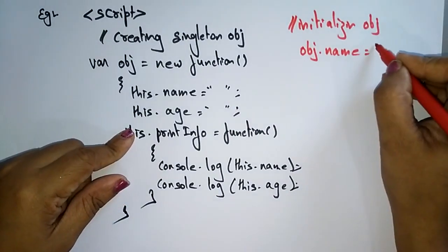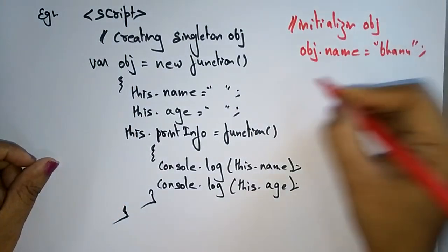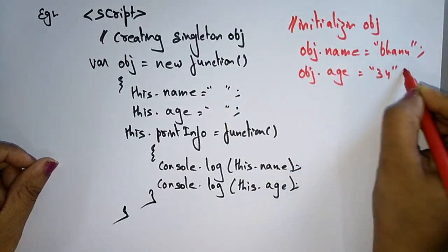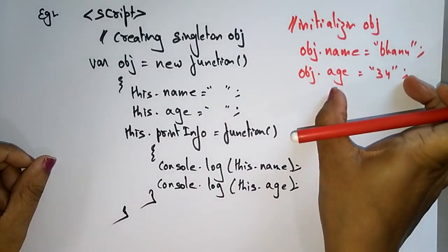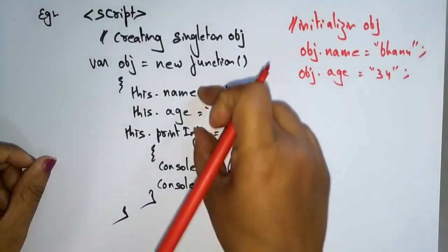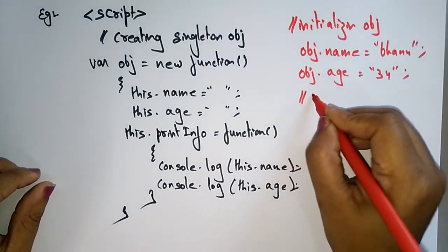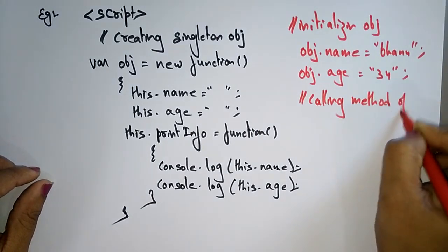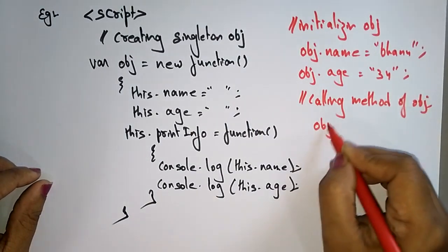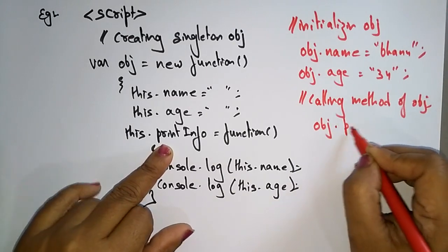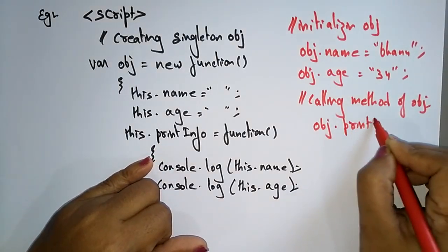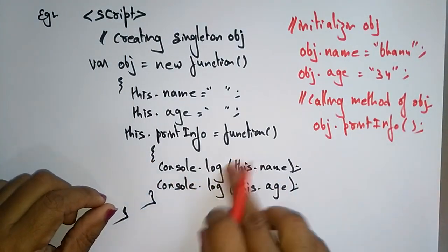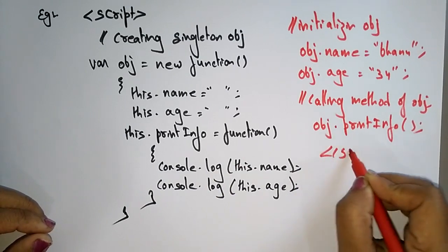I set 'object.name' to 'Banu' and 'object.age' to the age value. So I've declared and initialized the values. Now calling the method of the object: 'object.printInfo()'. Whenever you call this, the printInfo function will be executed.